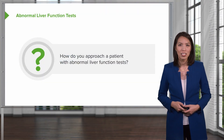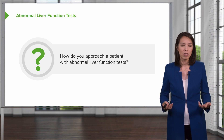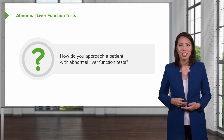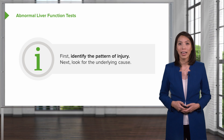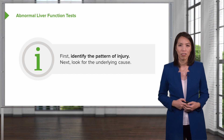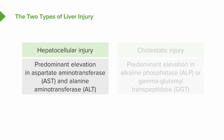Before we begin, let's talk about how to interpret abnormal liver tests. When you approach a patient with abnormal liver lab tests, you should always identify the pattern of injury and then look for the underlying cause. The first type is a hepatocellular injury pattern, where you have a predominant elevation in the aspartate transferase or the alanine transferase, abbreviated as AST and ALT.